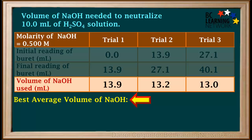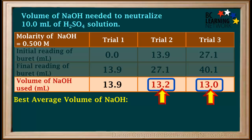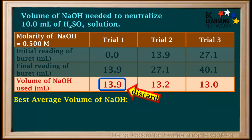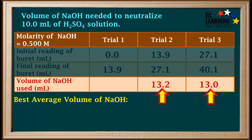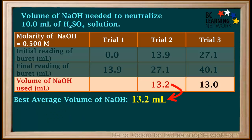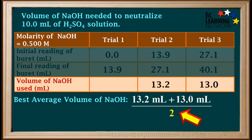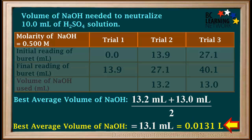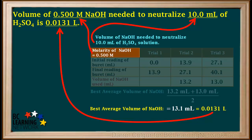Now we need to calculate the best average volume for the NaOH used. The value of 13.9 mL for Trial 1 is considerably larger than the values of 13.2 and 13.0 for Trials 2 and 3. When one value is considerably larger or smaller than the others, we discard it when calculating the best average. Discarding 13.9, we average 13.2 and 13.0 milliliters: that gives 13.1 milliliters, which we divide by 1000 to convert to 0.0131 liters of NaOH solution.